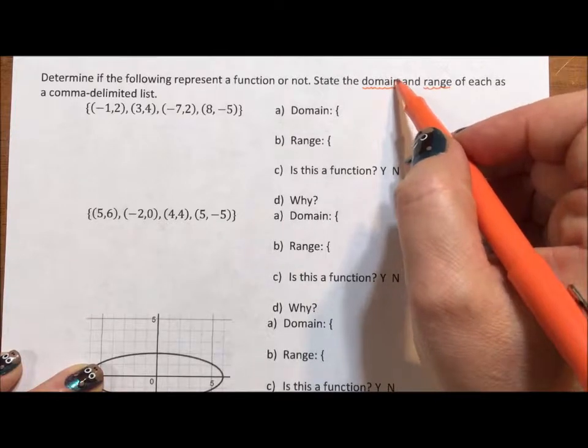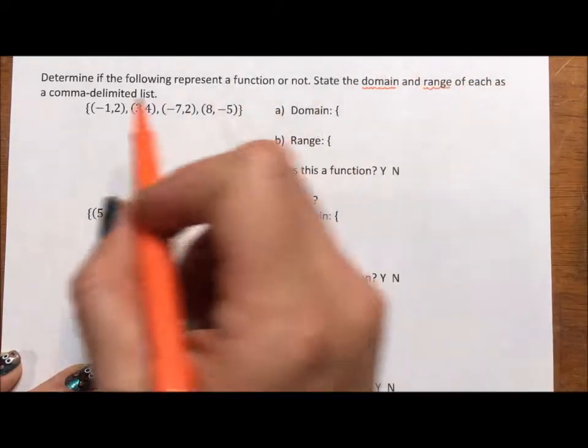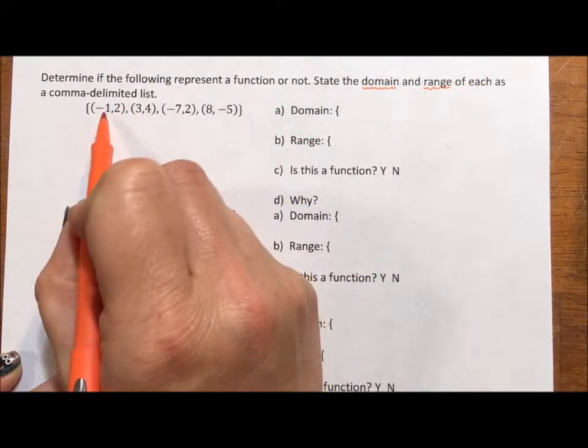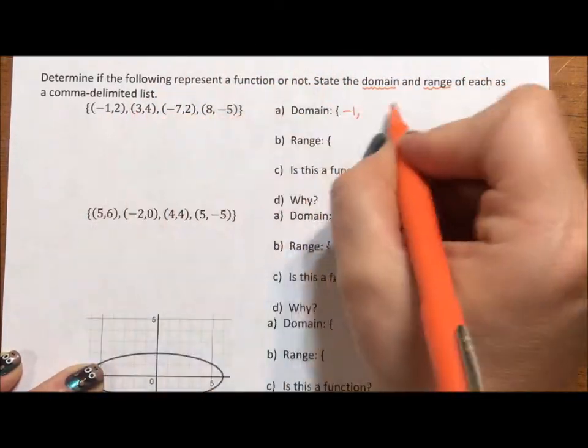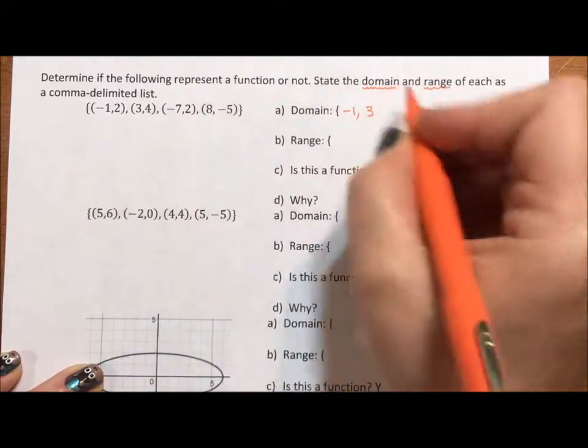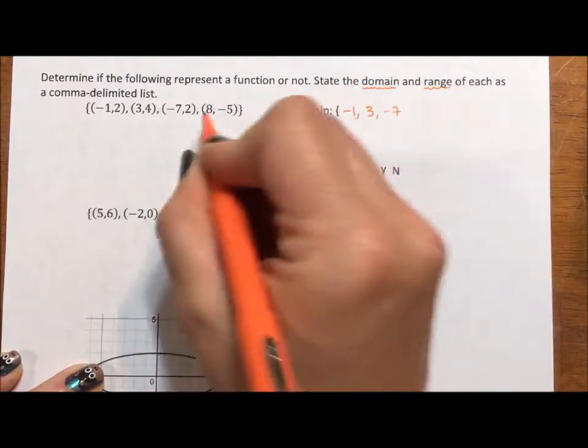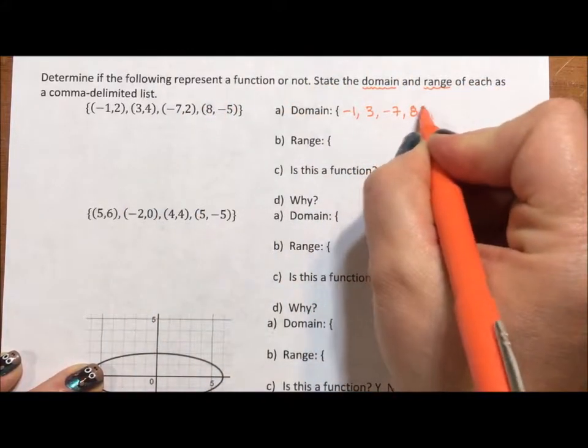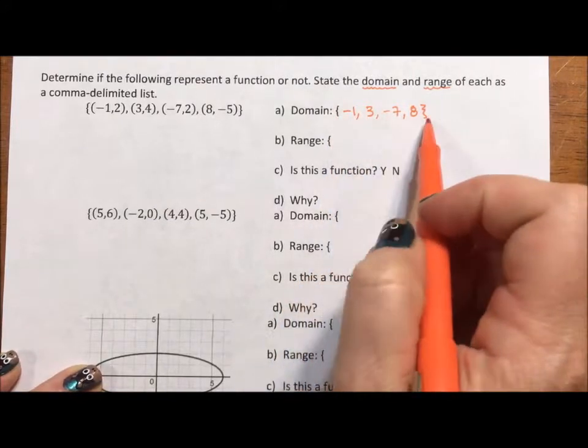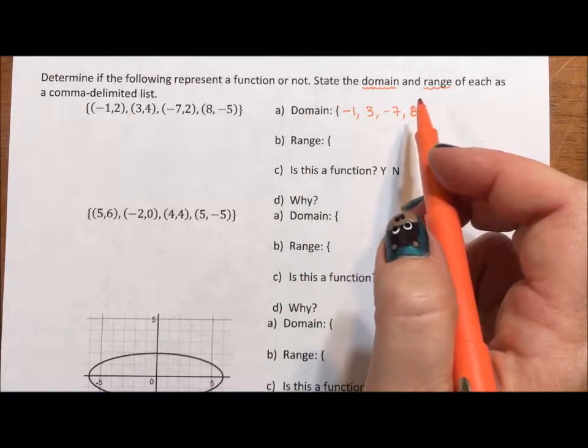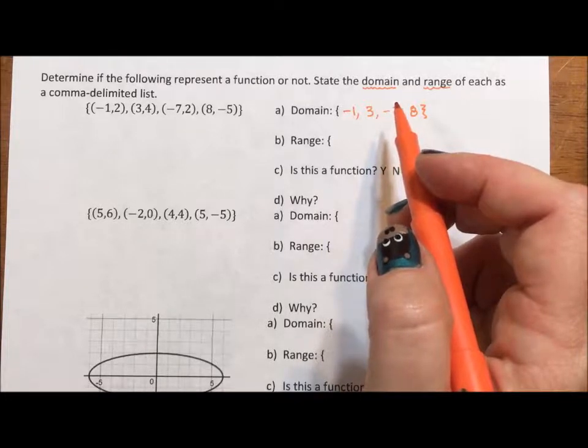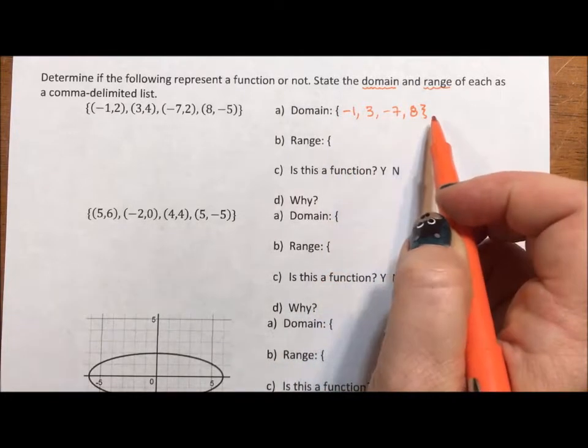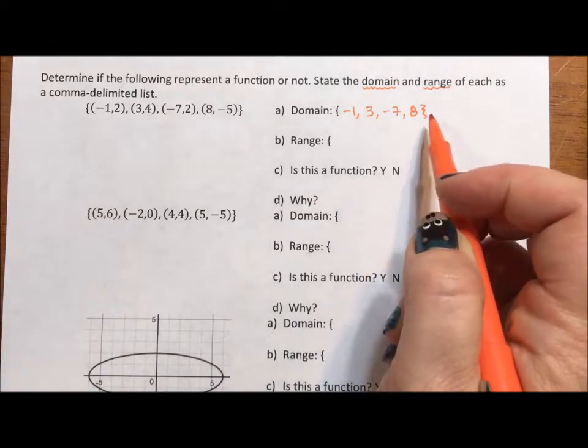Domain literally means x values. My x values are negative 1, 3, negative 7, and 8. Now this little curly bracket is how you do a set of numbers. So if you're laundry listing a set of numbers, you put it in the curly bracket. You often see this for answers as well. It's set notation, and it's the set of the domain.